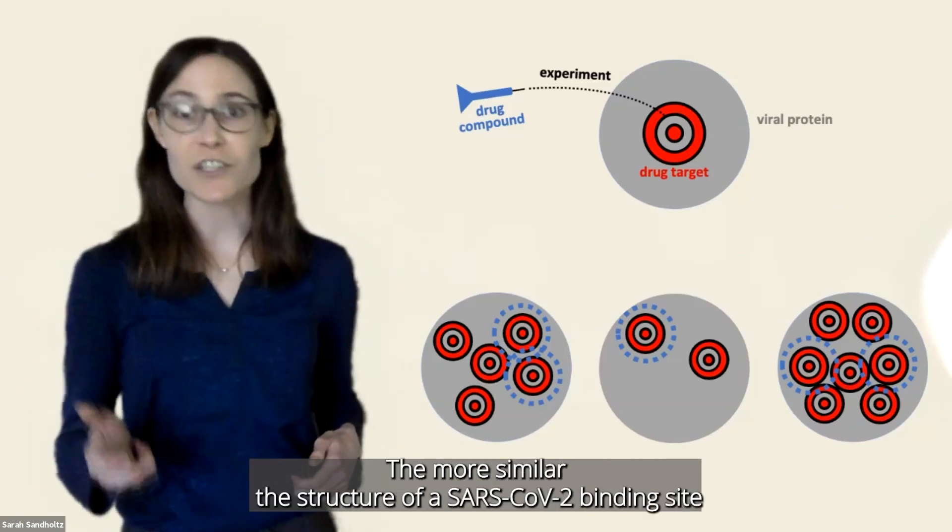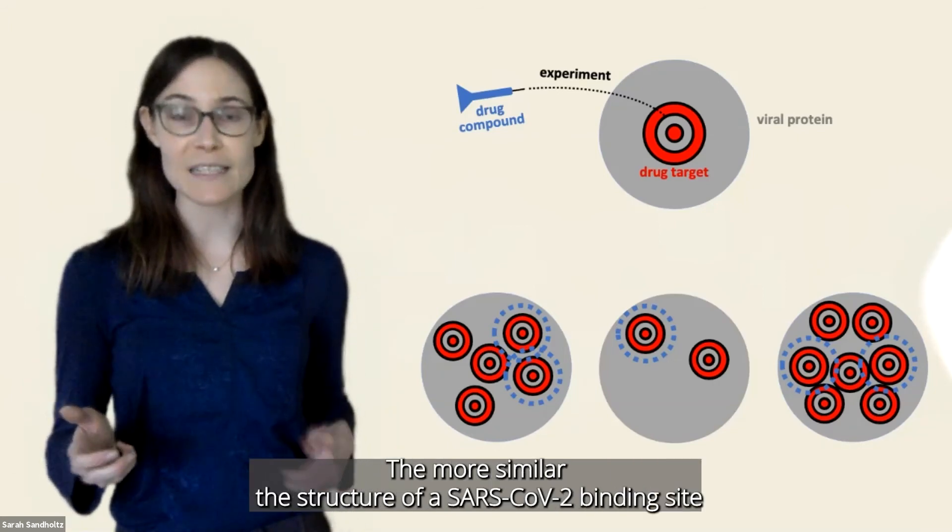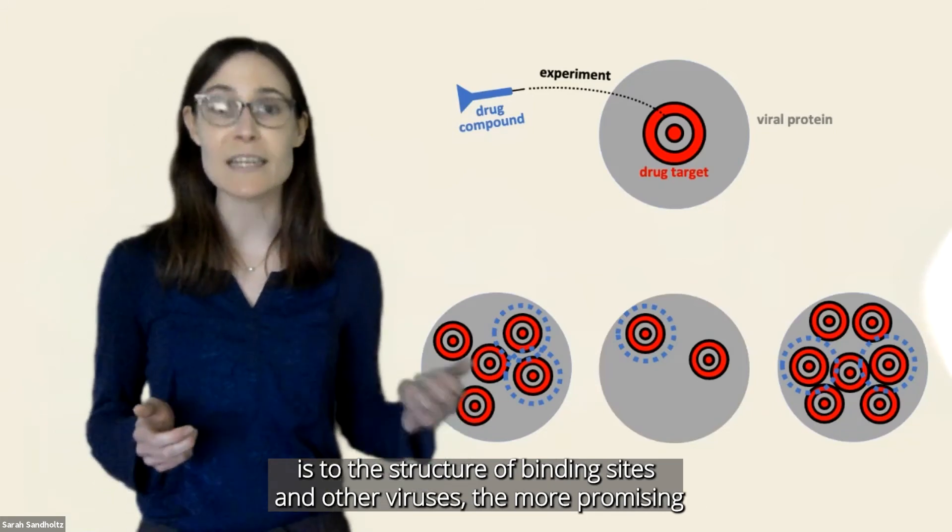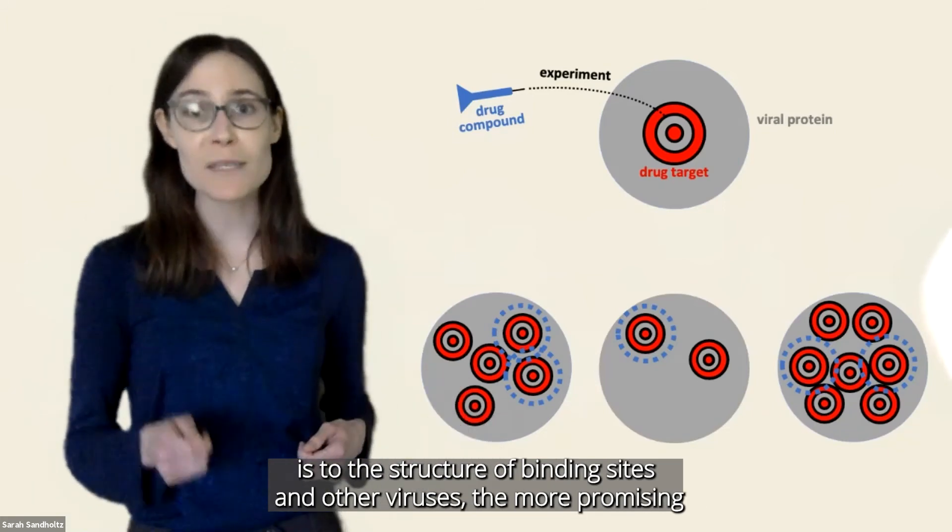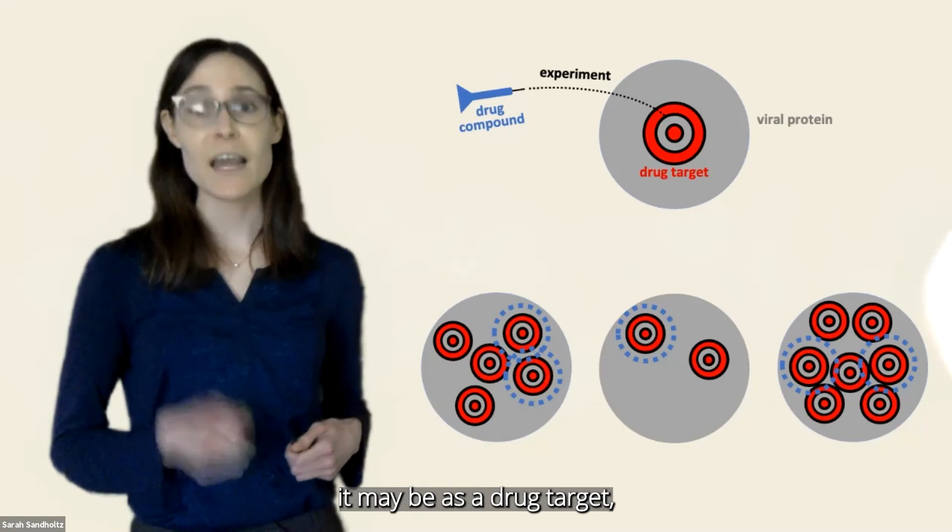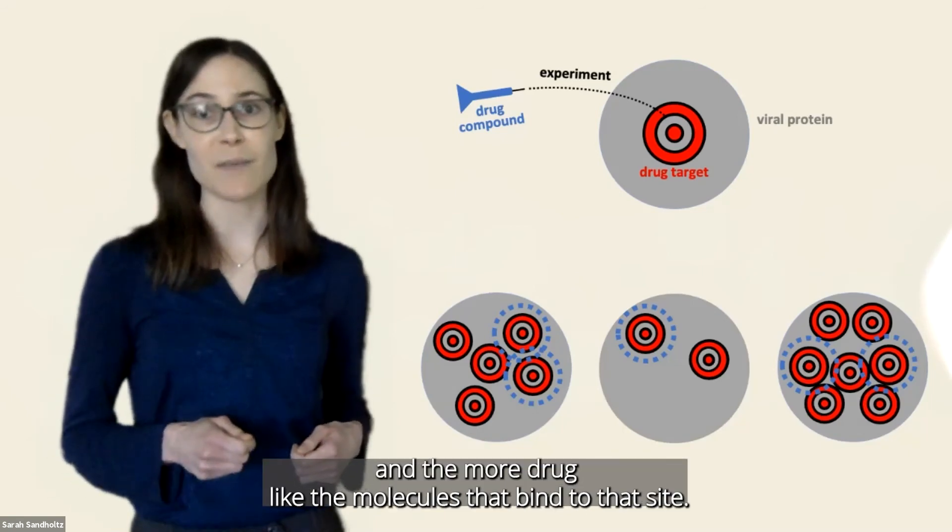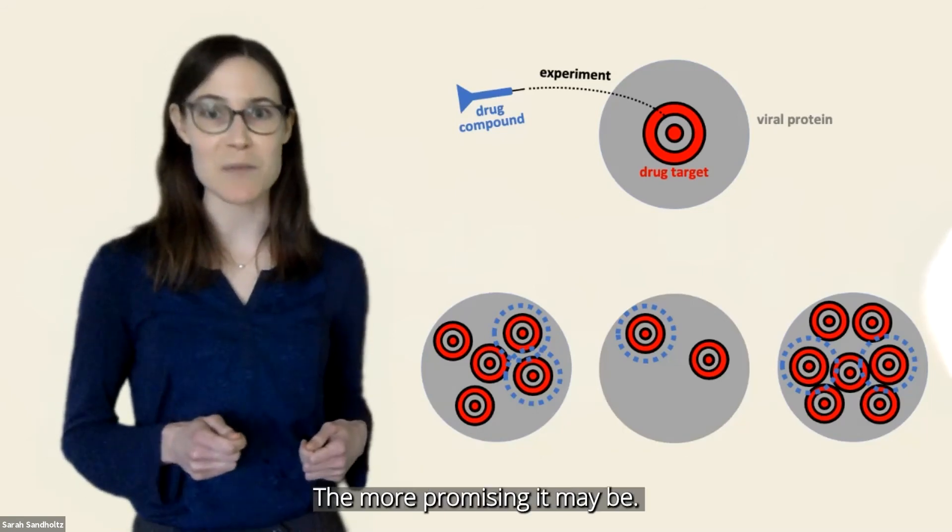The more similar the structure of a SARS-CoV-2 binding site is to the structure of binding sites in other viruses, the more promising it may be as a drug target. And the more drug-like the molecules that bind to that site, the more promising it may be.